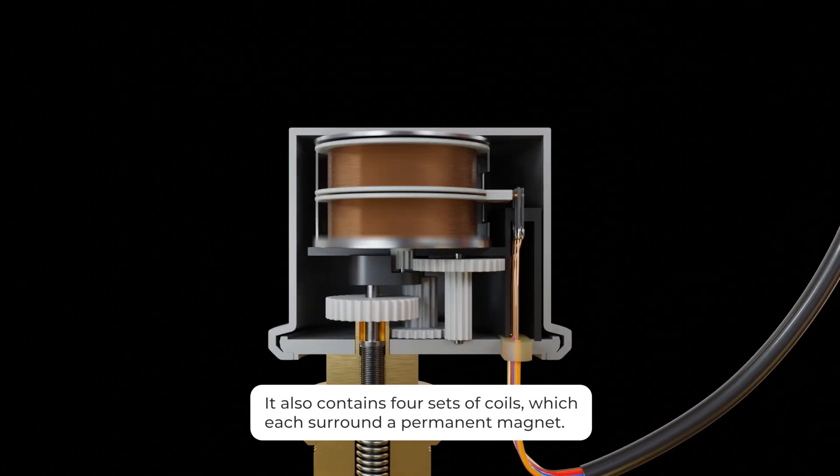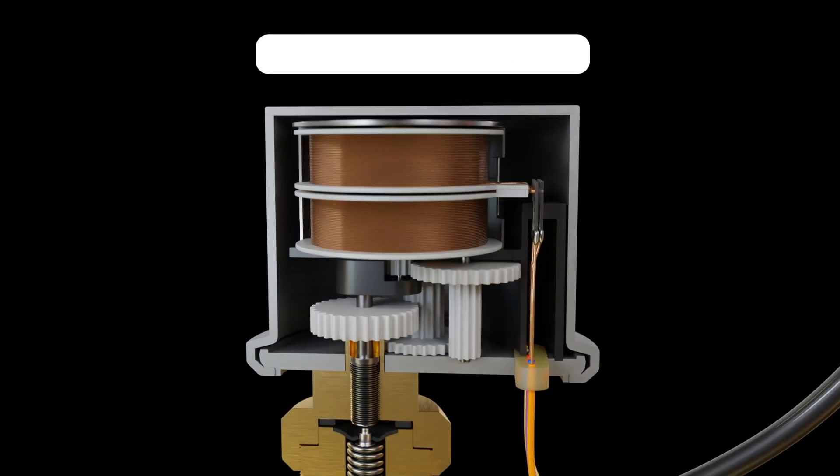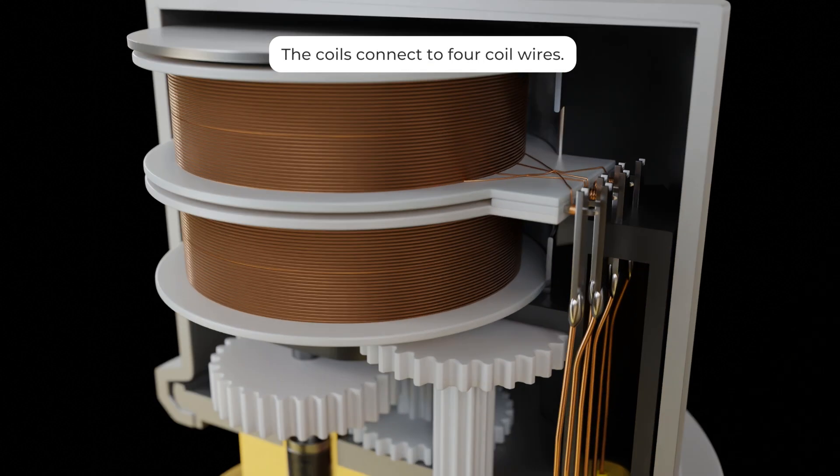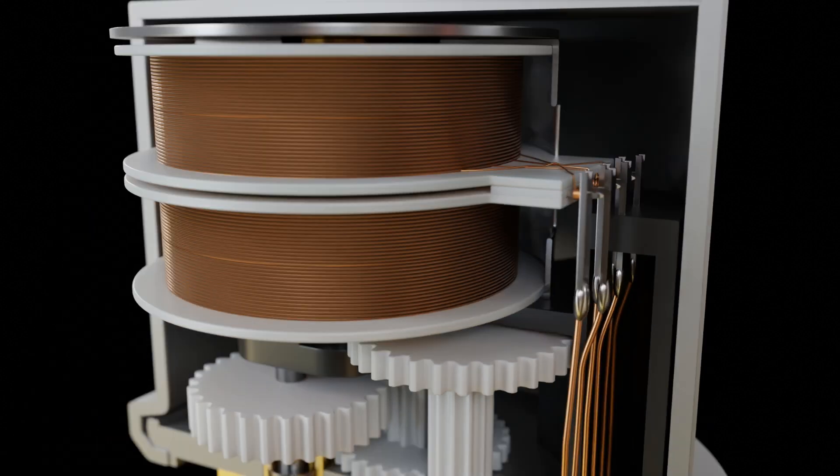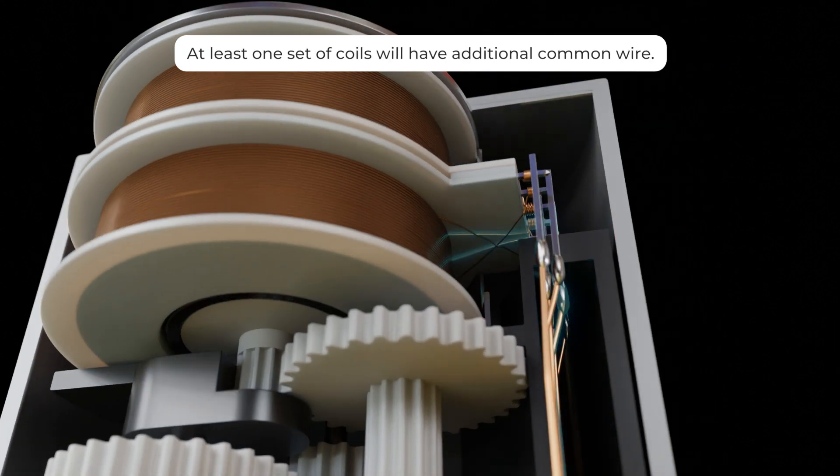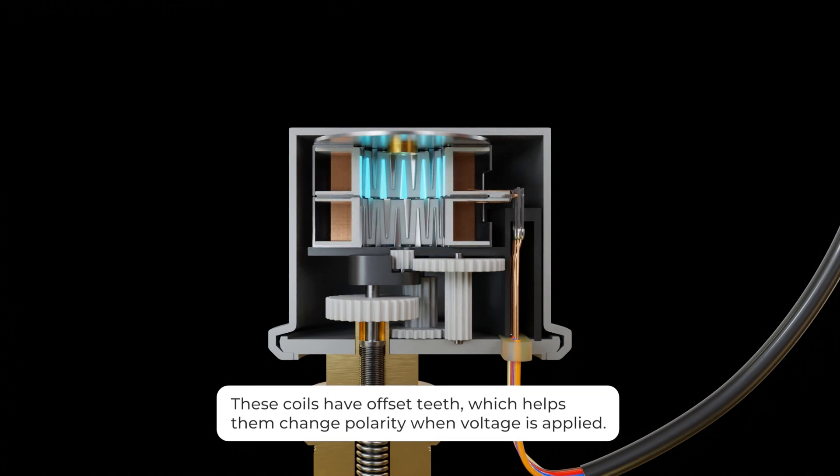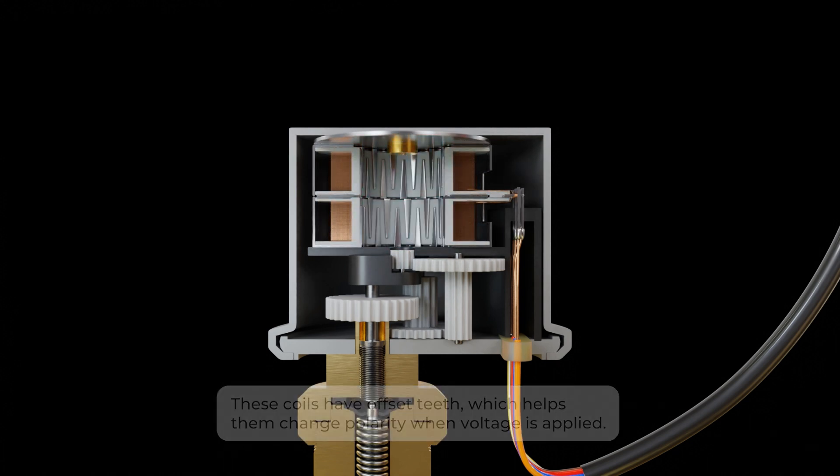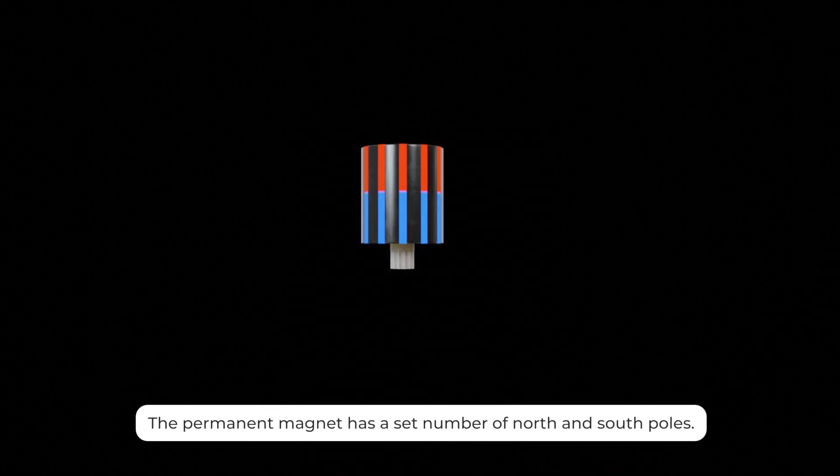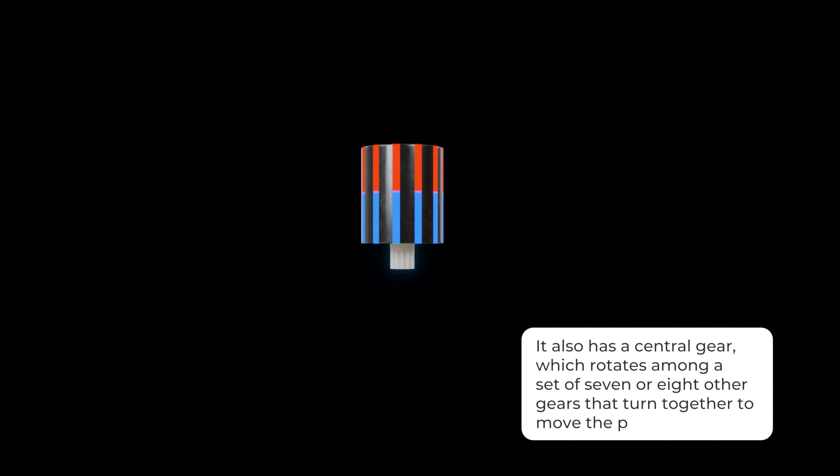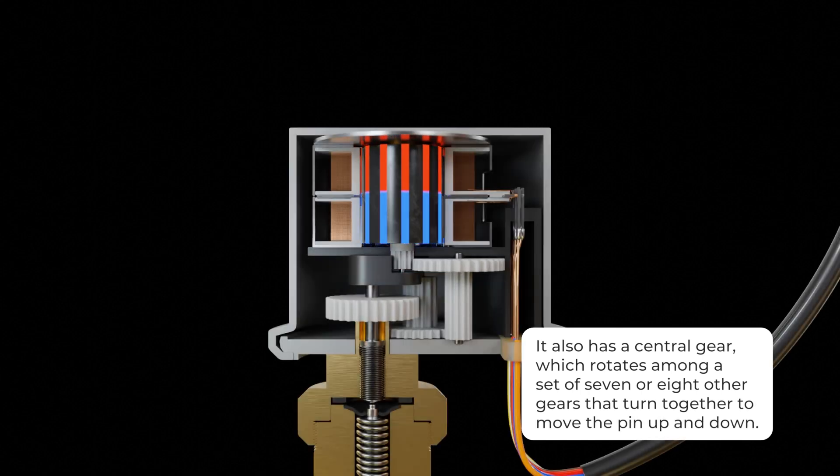It also contains four sets of coils which each surround a permanent magnet and connect to four coil wires and at least one set of coils will have an additional common wire. These coils have offset teeth which helps them change polarity when voltage is applied. The permanent magnet has a set number of north and south poles as well as a central gear which rotates among a set of seven or eight other gears that turn together to move the pin up and down.